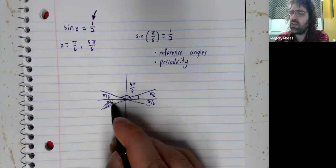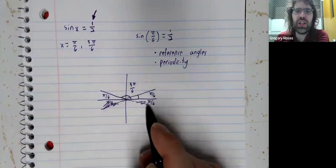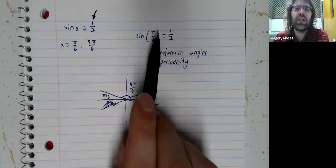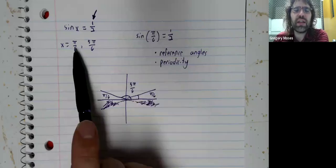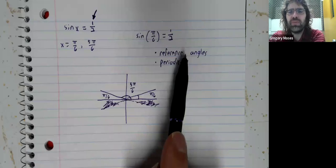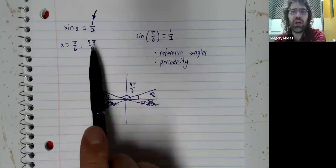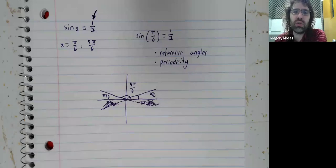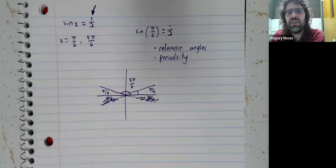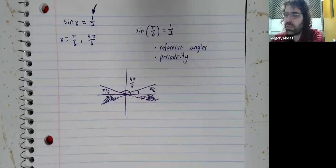Okay, so we solve this equation mentally. We get pi over six. We use reference angles to give us another solution. But these are not the only possible solutions. And this is where periodicity comes into play.